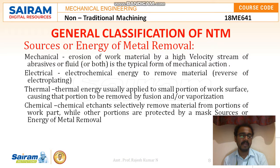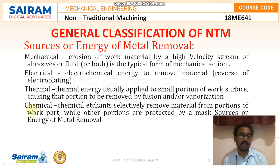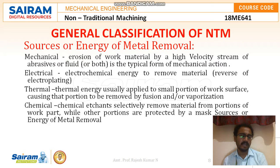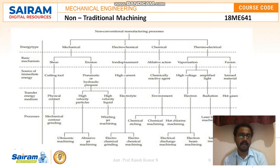Thermal energy may be part of the working process and usually causes the portion to be removed by either fusion or vaporization. The last energy type is chemical energy, where we use chemical actions to selectively remove excess material from the portions of the work part we wish to remove, while other portions are protected. These are the major sources of energy for the metal removal process.